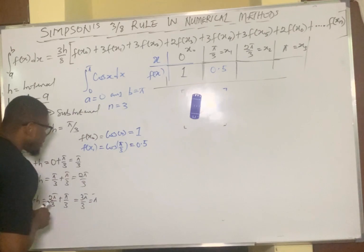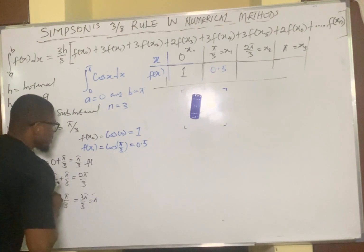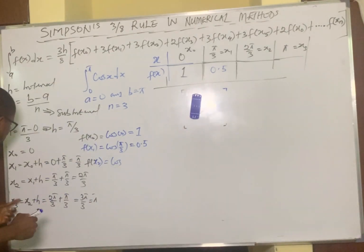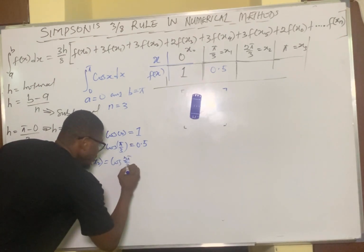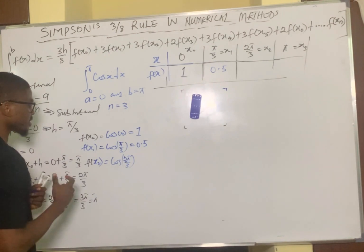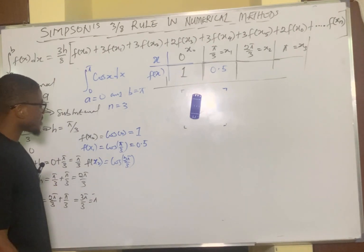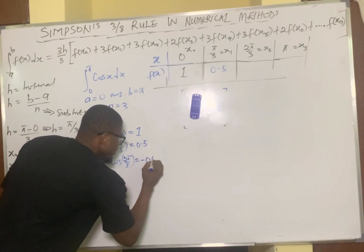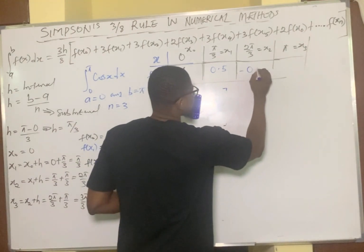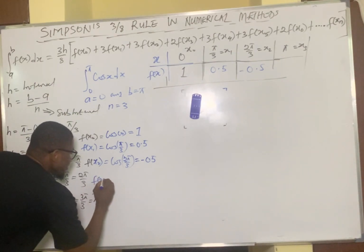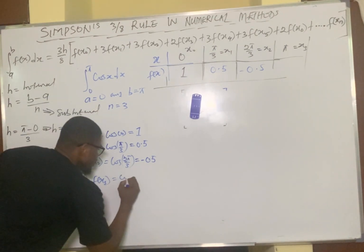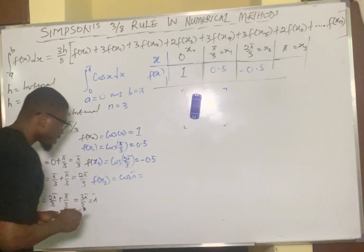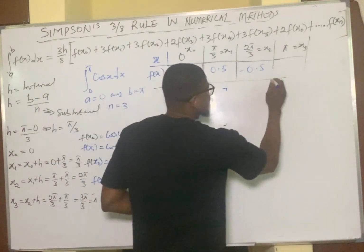For f(x₂): x₂ is 2π/3, so we evaluate cos(2π/3). Converting: 2 × 180 / 3 = 120°. So cos(120°) equals −0.5. Finally, for f(x₃): x₃ is π, so we evaluate cos(π), which is cos(180°), and that gives us −1. So the last value is −1.